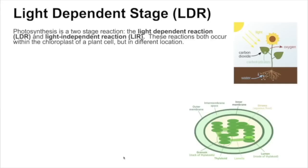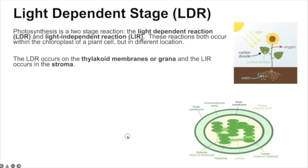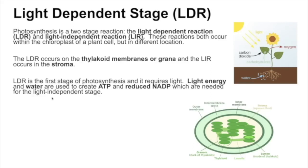The fluid part in the center is called the stroma, and that's where the light-independent reactions happen — lots of enzymes are found there. We also have the inner and outer membranes controlling what can enter and exit. Photosynthesis is a two-stage reaction: the light-dependent reactions happen first, requiring light, on the thylakoid membrane. Light energy and water are used to create ATP and reduced NADP.